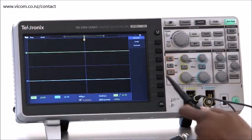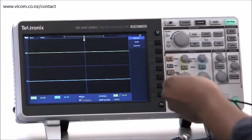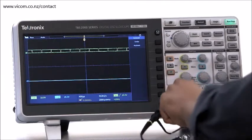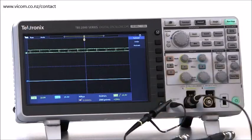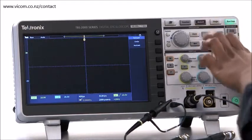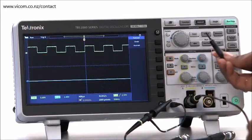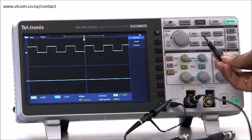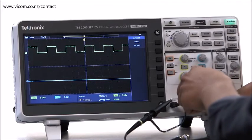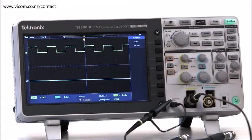You need to adjust or compensate these probes to match the scope input. To compensate these probes, connect its inputs to the compensation output. I'll use AutoSet to get the compensation signal on the screen. Use a small tweaker, which is usually included with the probe, to turn the compensation adjustment on the probe until the signal looks like a square. When it does, you're all done.